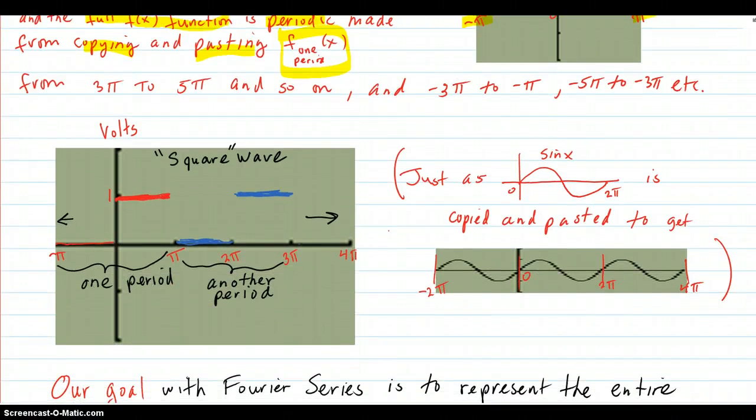So in other words, this is your one period here and there. That's one period from negative pi to pi. And then you just copy and paste that so you have the same look again from pi to 3 pi. And then you have the same look again. And then you keep on going like that.